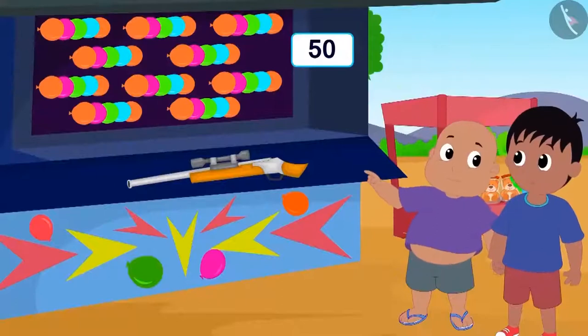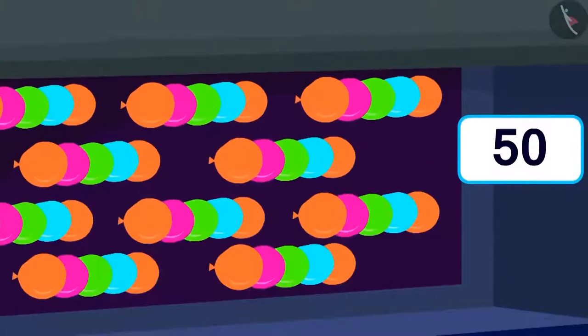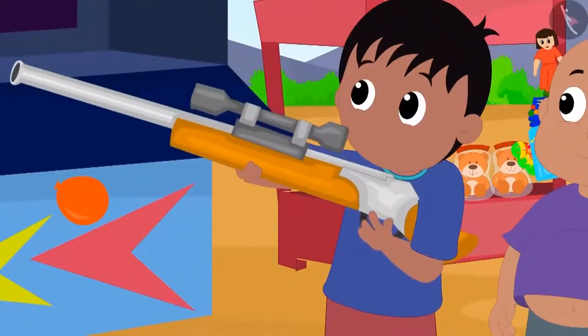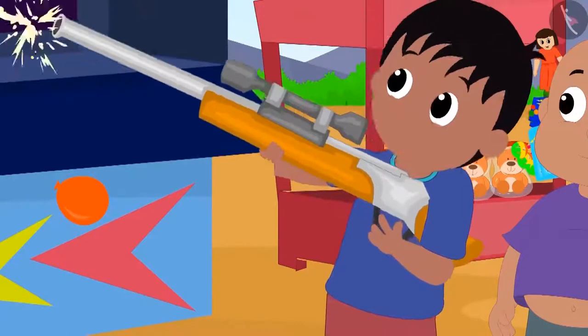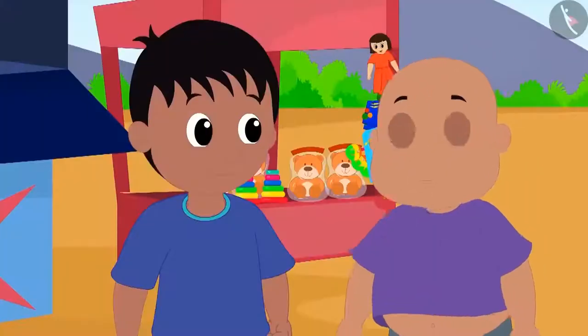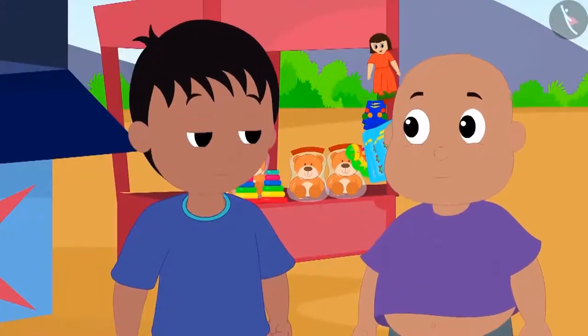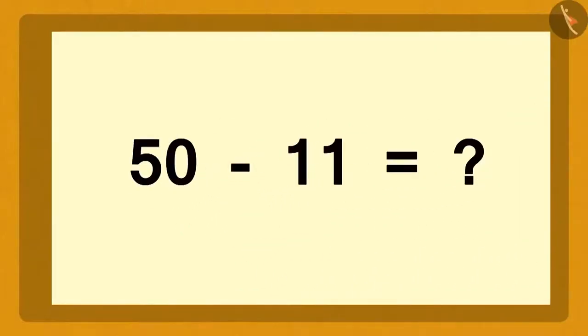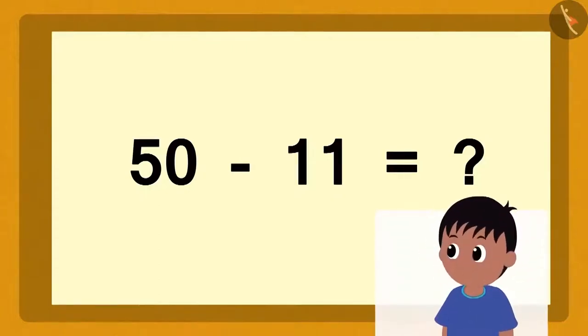Raju and Bablu went to a shop to burst balloons. There were a total of 50 balloons. Raju started bursting the balloons. When his turn got over, 11 balloons were left. Bablu asked Raju, how many balloons he had burst? Bablu immediately wrote this question on a piece of paper. But Raju started thinking because he could not understand how he could possibly subtract one once of 11 from zero once of 50.